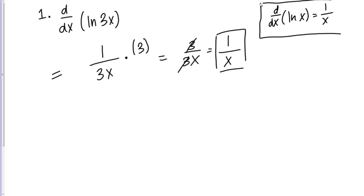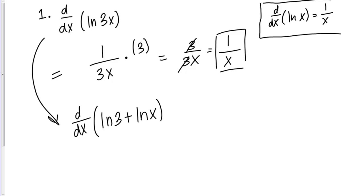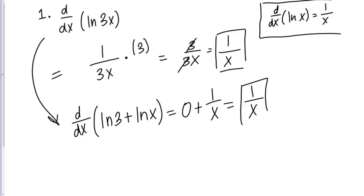What we did is take 1 over the inside of the natural log times the derivative of what's inside — that's how to use the chain rule when taking the derivative of the natural log of something. There's also another way to look at this problem. You can use log rules to rewrite the natural log of 3X as the natural log of 3 plus the natural log of X. The natural log of 3 is a constant, so its derivative is 0, and the derivative of ln X is 1 over X — the same answer.